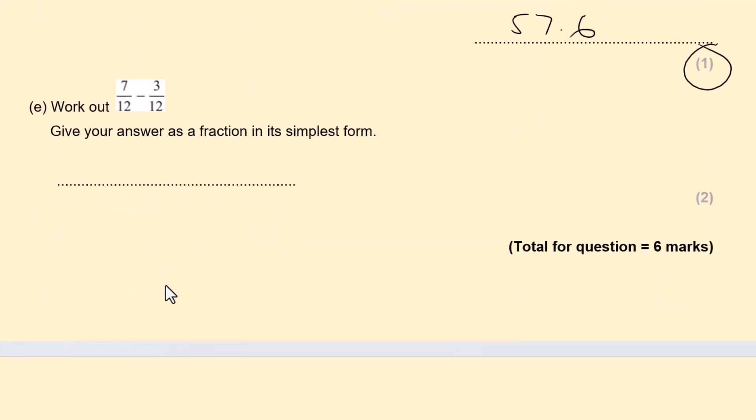Next, fractions with the same denominator. 4 is the same. So we don't need to change anything. Don't need to make it into an equivalent fraction. 7 to 8 divided by 3 is 4 over 12. Give your answer as a fraction in simplest form. When you simplify it, you can divide top and bottom by 4. That gives 1 over 3. And that's the answer. It's worth two marks because we have to simplify it.